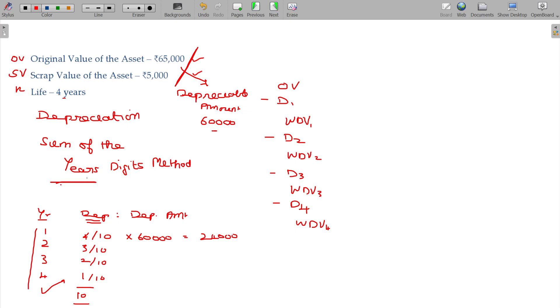Sum of the year's digits. 5, 4, 3, 2, 1, sum of the year is 15. That is the denominator value. If you have 1, 2, 3, 4, 5, that is how you have to count. Highest first, from the top level.